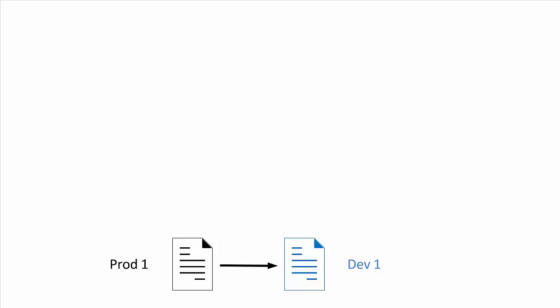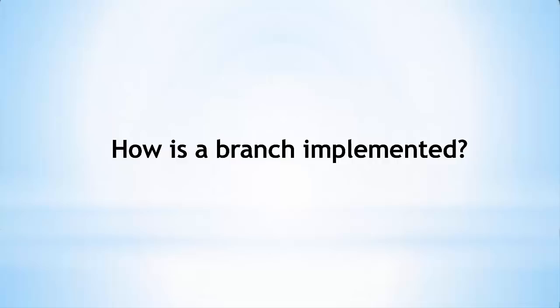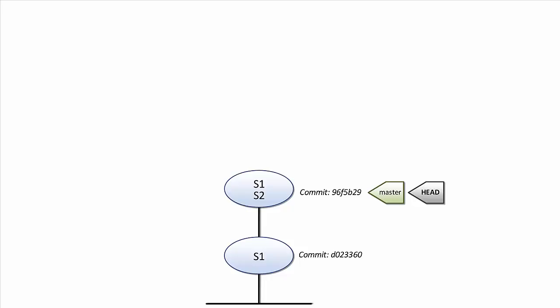What is a branch for? Branches allow us to work on different versions of the same files in parallel. Our edits on one branch can be independent of work on other branches, and we can then decide to merge changes into other branches. For example, we could have a production branch, a development branch, and a branch for bug fixes. The implementation of a branch is actually quite simple — a branch is just a pointer to a SHA-1 hash.